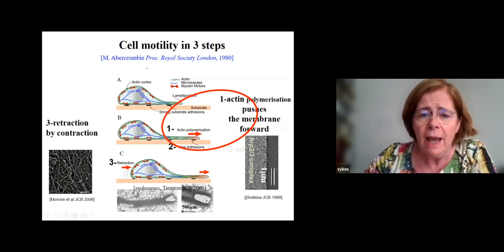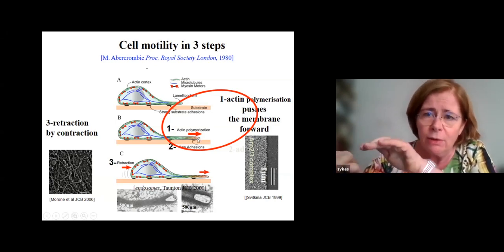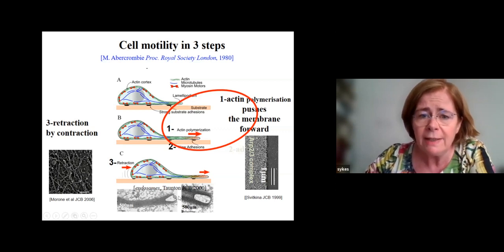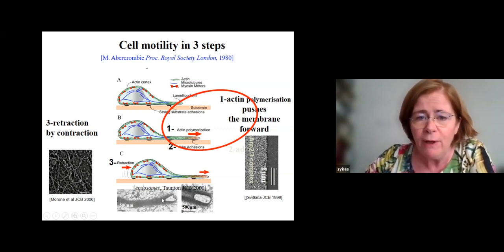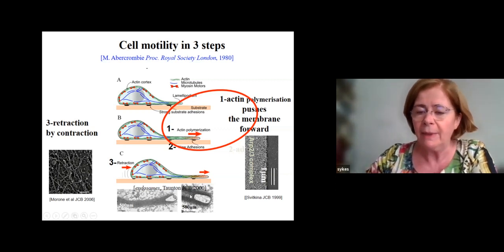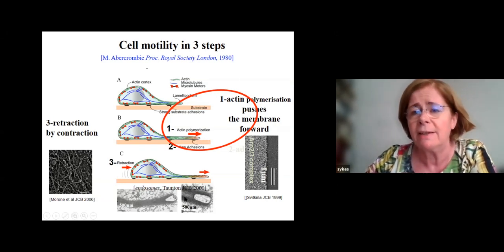We have worked extensively on actin polymerization. The interesting thing is that this actin polymerization mechanism — the fact that actin filaments can grow and push an object — is found inside cells. These are endosomes inside cells pushed by what has been called actin comets, made of filaments that are able to deform the shape of this object or be hollow. It's the same mechanism that pushes the membrane forward and pushes objects inside cells.